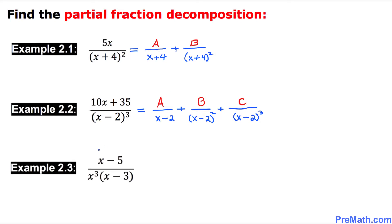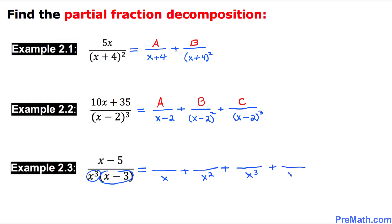In the next example, we have x power 3, meaning x is repeating itself three times, plus another linear factor x minus 3. For x power 3, we write three fractions: x power 1, x power 2, and x power 3. Then we add one more fraction with x minus 3 at the denominator. The numerators are A for the first, B for the second, C for the third, and D for the fourth. That is our answer.